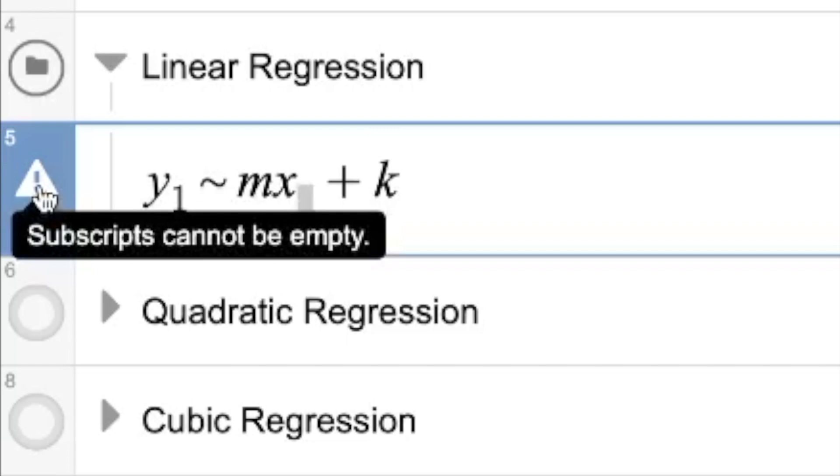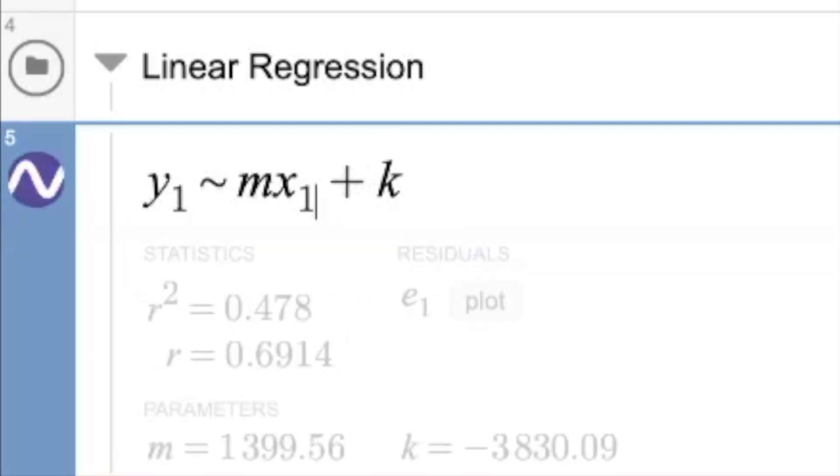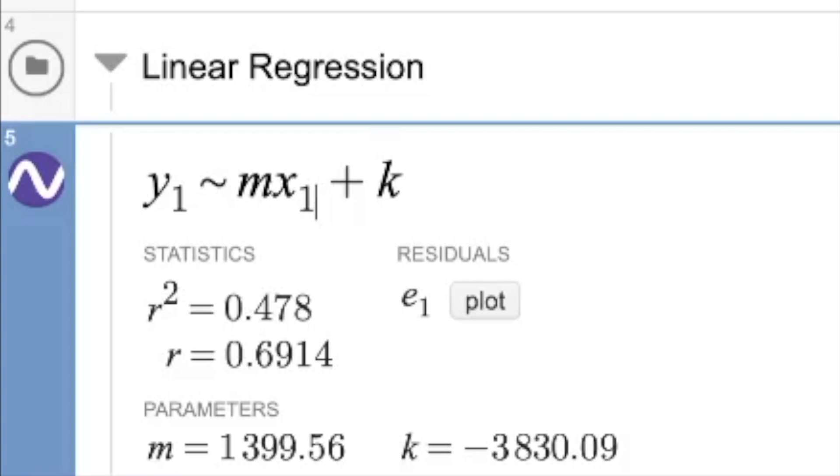Now when I take out that one on the x, and this is a very common thing, it says subscripts are not allowed to be empty. Notice we're not doing a regression just between y and x. We're using the values from the table up above, so we need to put in x1 and y1 respectively.